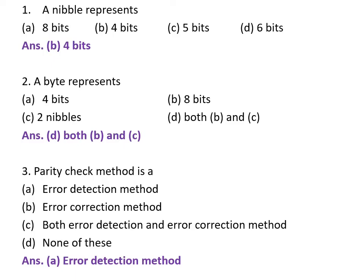The very first question is: What does a nibble represent? A. 8 bits, B. 4 bits, C. 5 bits, and D. 6 bits. The correct answer is B, 4 bits.